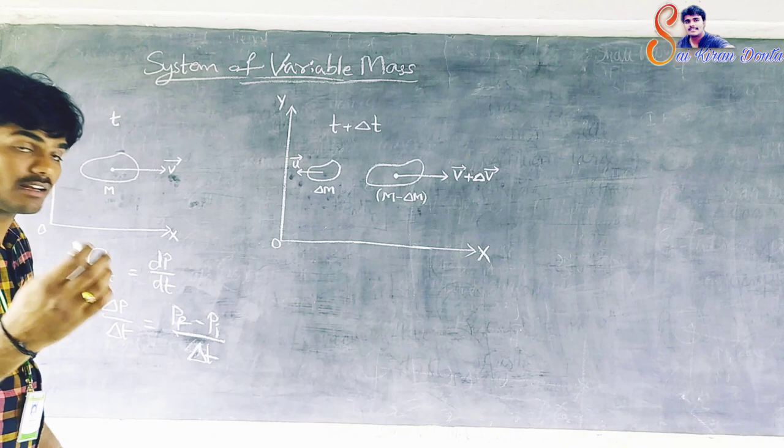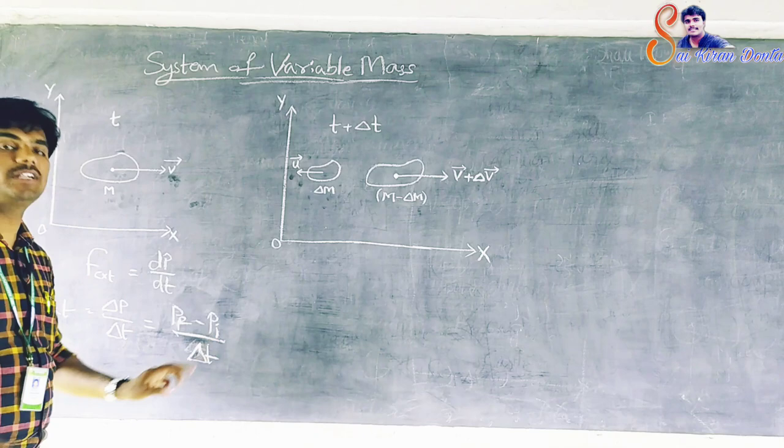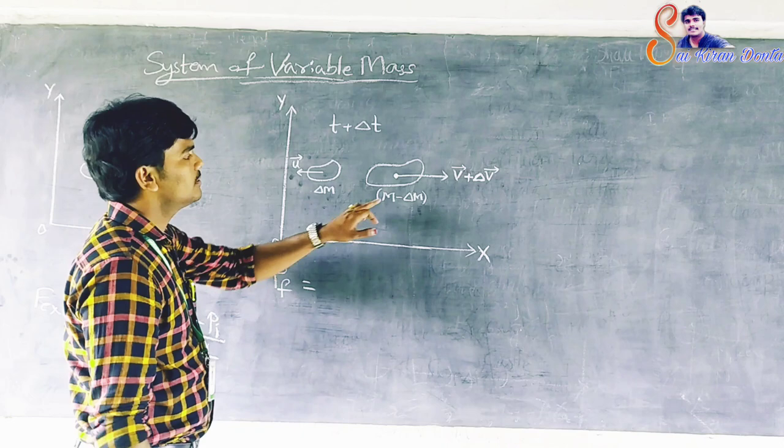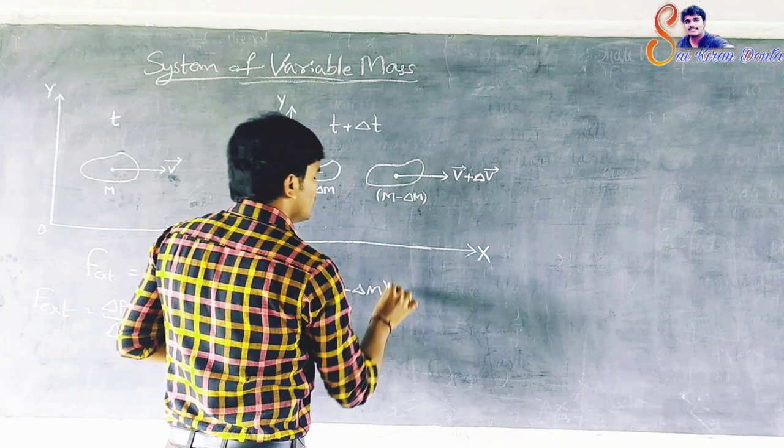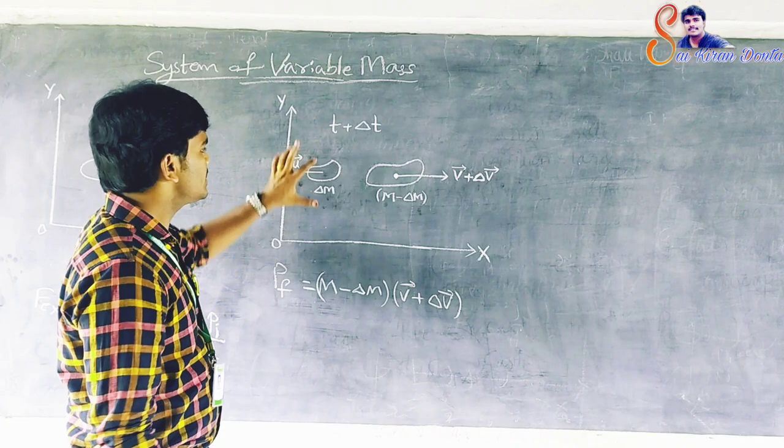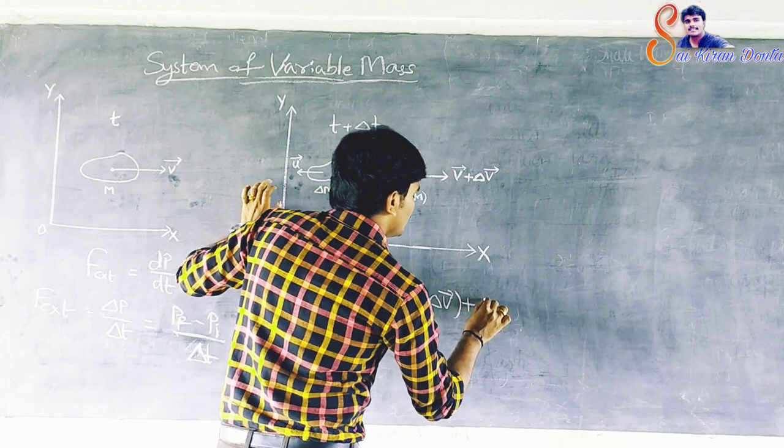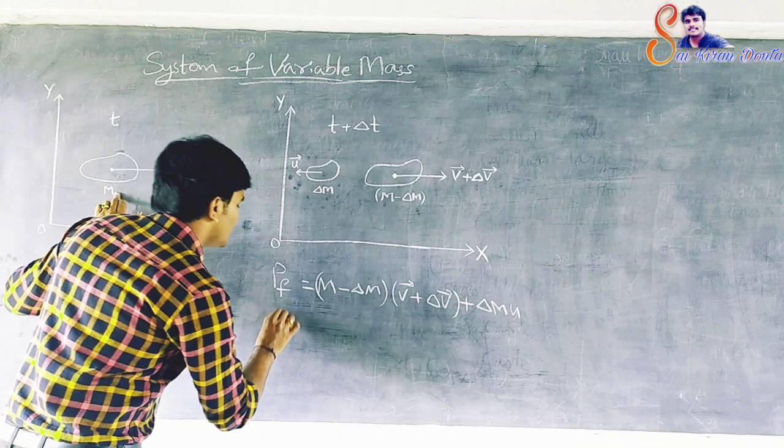Where pf is the final momentum of the system and pi is the initial momentum of the system. The final momentum pf equals (M minus delta M) times (V plus delta V) plus delta M times U. The initial momentum pi equals M times V.